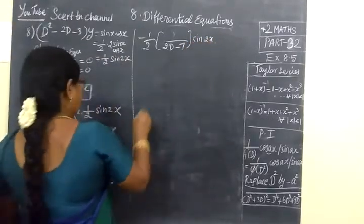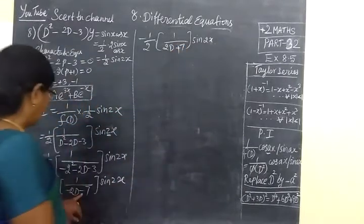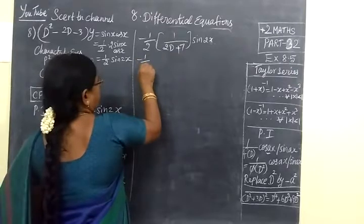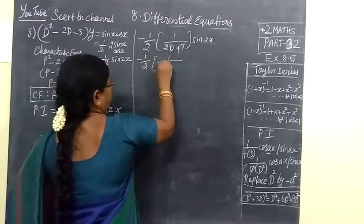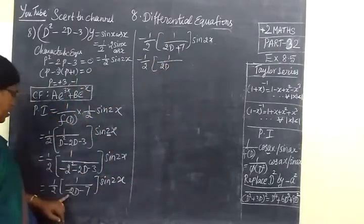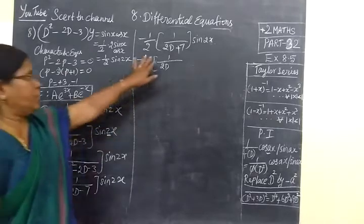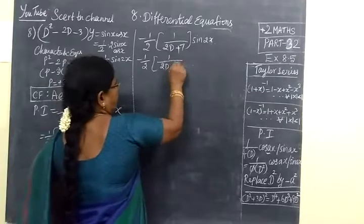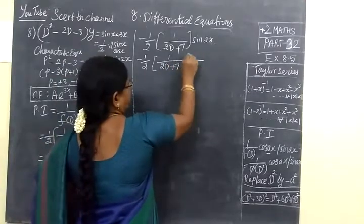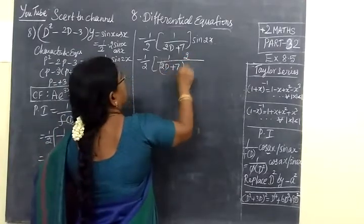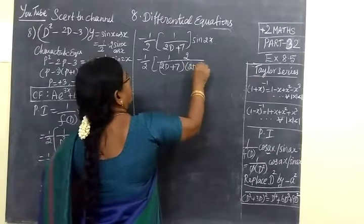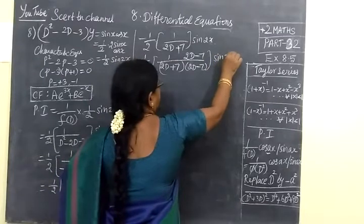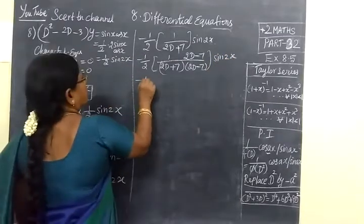Now, minus 8 equals plus 7. So minus half. Now we take conjugate. This is procedure. These kinds we replace. This is condition. So plus 7 is conjugate minus 7. So 2D minus 7, 2D minus 7, this is sin 2X.